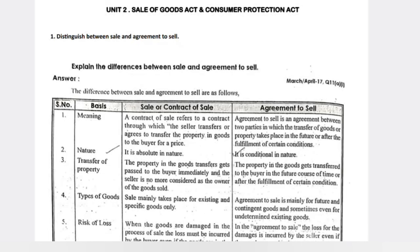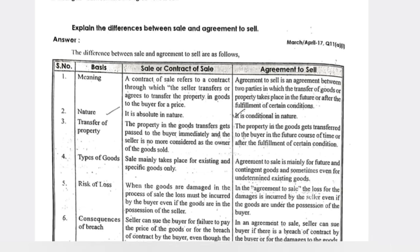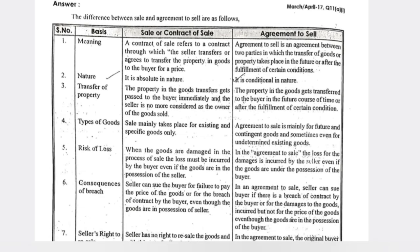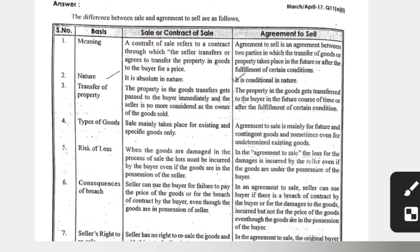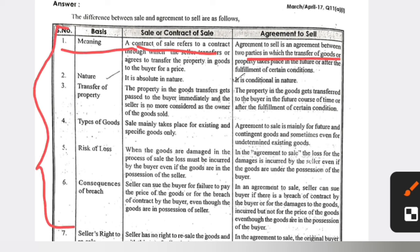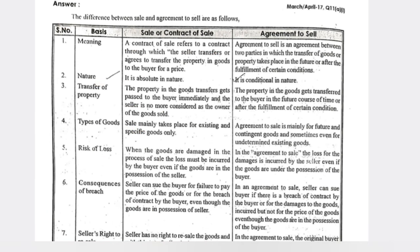Students, from Unit 2 — Sale of Goods Act and Consumer Protection Act — here I will discuss the important questions which I have given in the video. For today's examination, the first one is differences between sale and agreement to sale. You need to be perfect with your choice. Remember the basis: nature, transfer of property, types of goods, risk of loss, consequences of breach — you need to remember these differences.